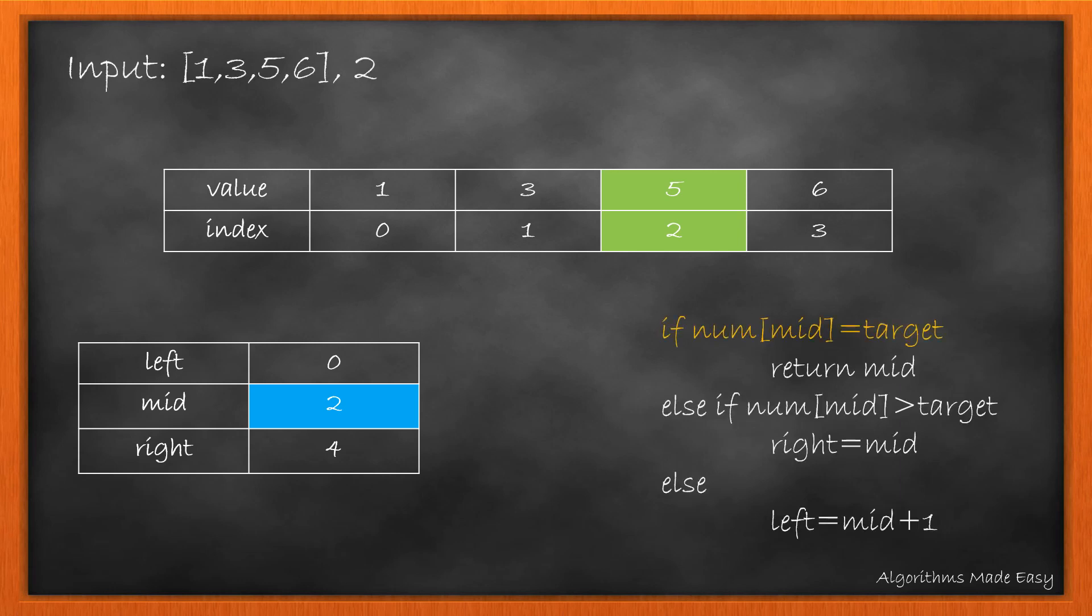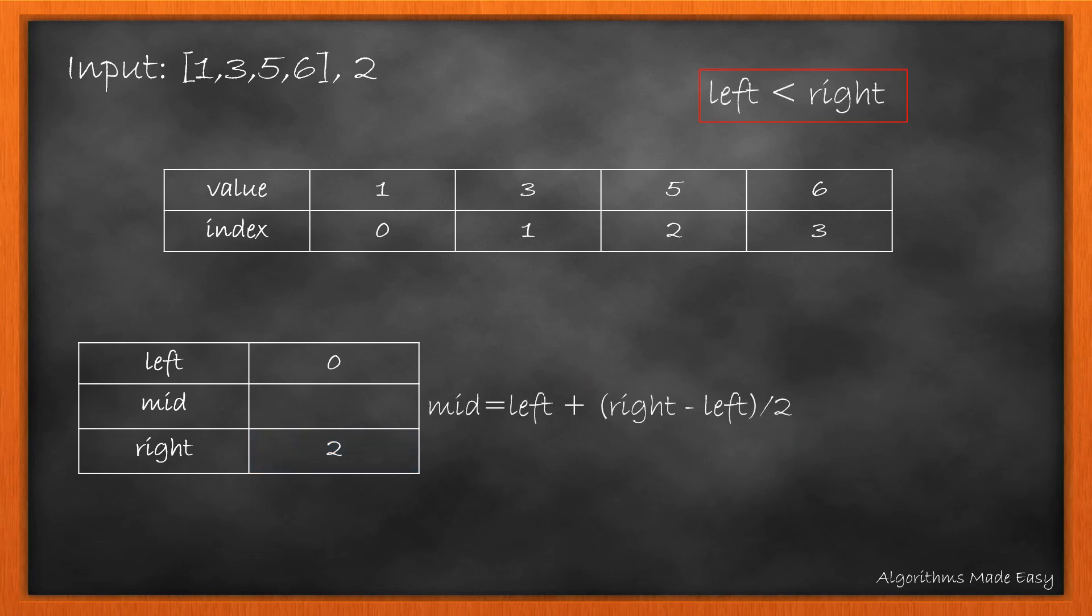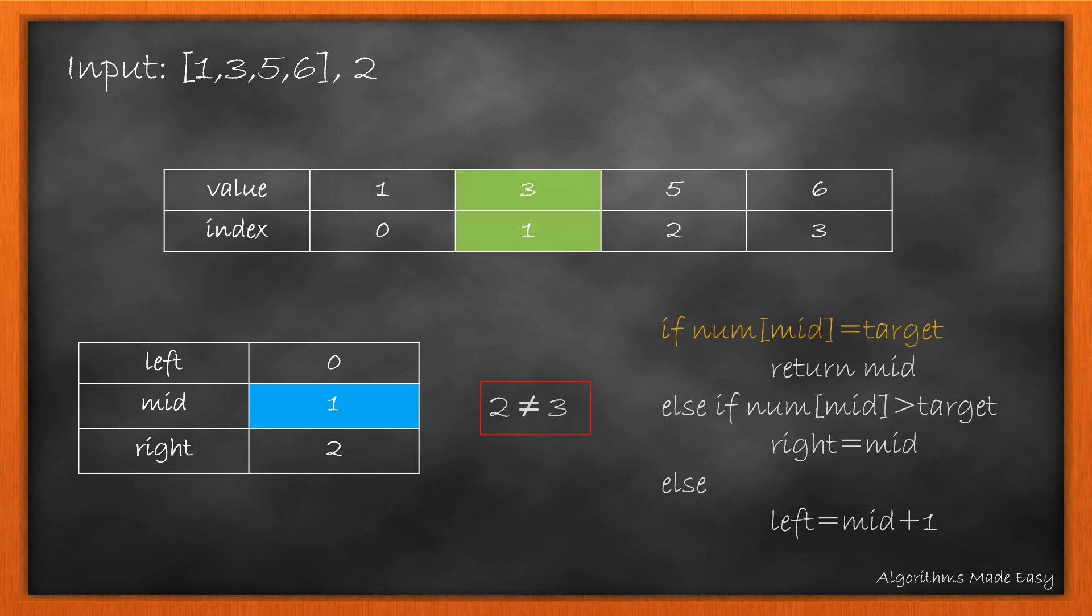Now what if the target value was 2 instead of 5? Then 5 is greater than 2, so we update right to mid. Now as left is still less than right, we continue our loop and calculate the mid. We check for the conditions.